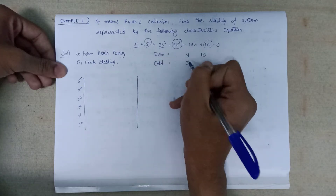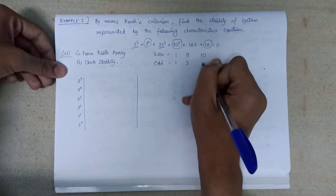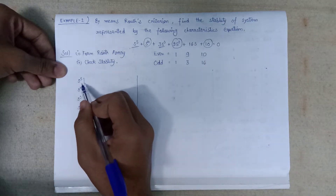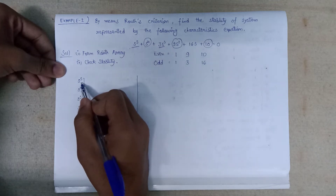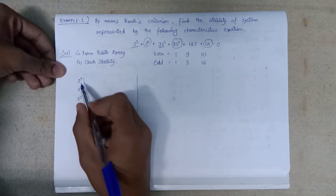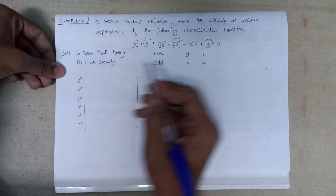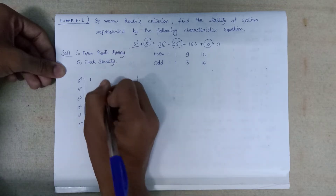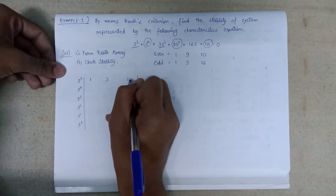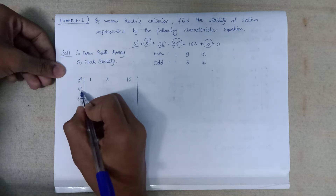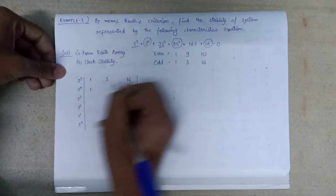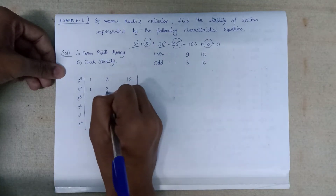s to the power 1 has coefficient 16. Coming back to the Routh array: the highest power of s is 5, so we write the odd powers first — 1, then 3, then 16. After that, the even power row for s to the power 4: 1, then 9, then 10.